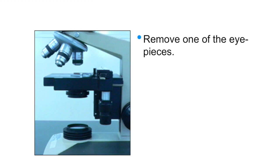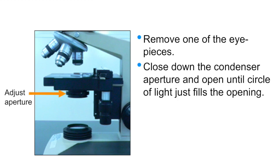We then remove one of the eyepieces, and looking down the open barrel, we adjust the height of the aperture on the condenser until it just fills the inside of the barrel. Having done that, we should then produce a column of light, as shown here, which is both centered and focused on the specimen.